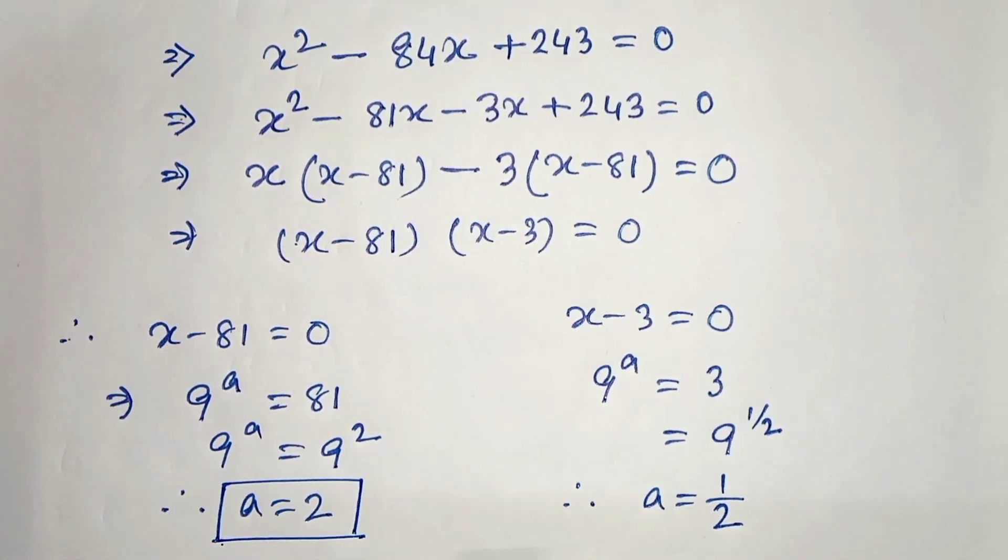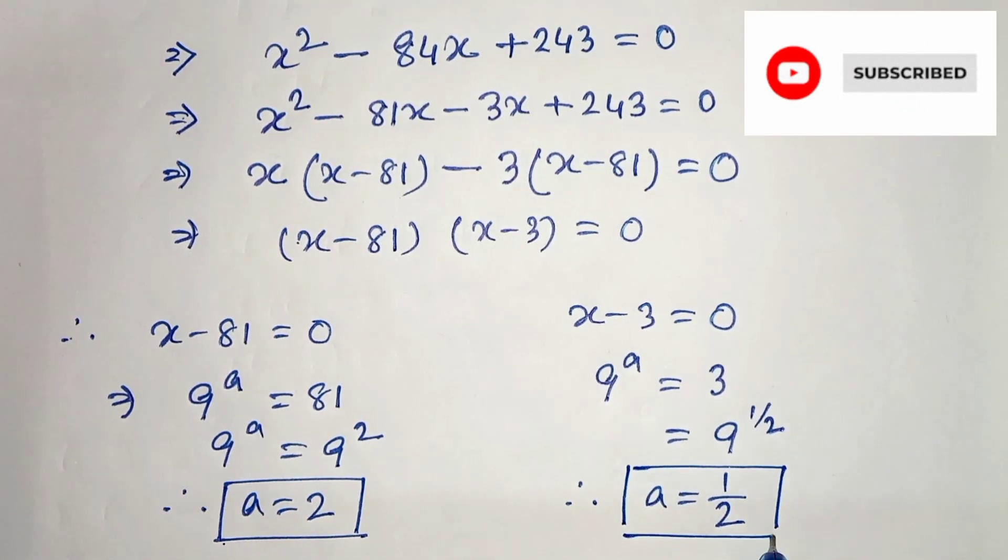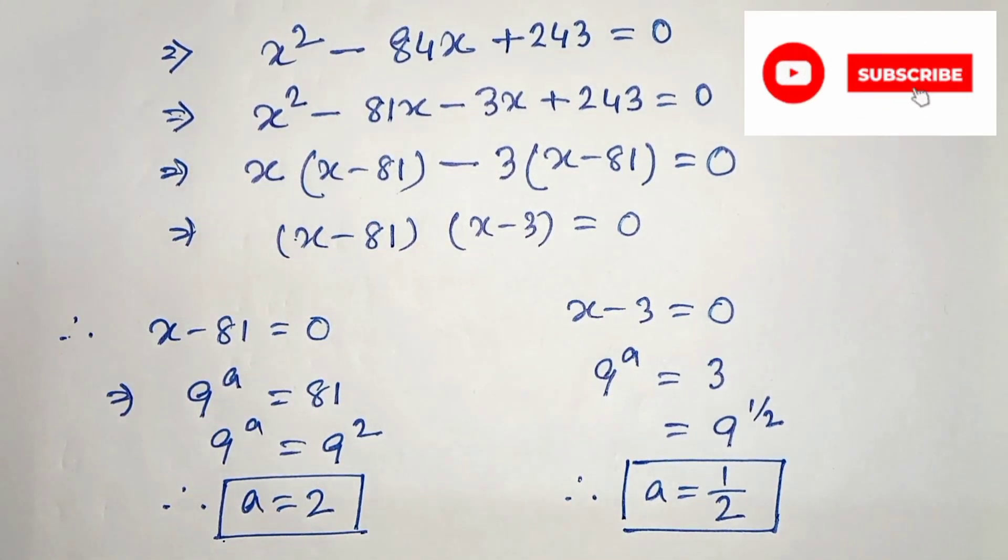So we have two values for a: one is 2 and another is 1 by 2. So this is our solution. Thanks for watching.